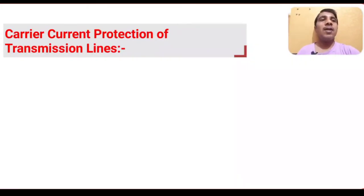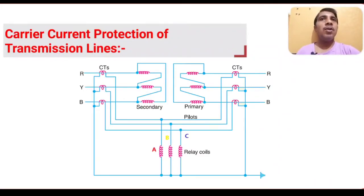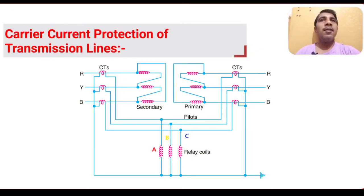For differential scheme of protection over shorter distances we use pilot cables, but for long transmission lines of 100 kilometers, pilot cables become very costly. Connecting pilot cables over 100 kilometers for protection is costlier, hence we go for carrier current protection of transmission lines.